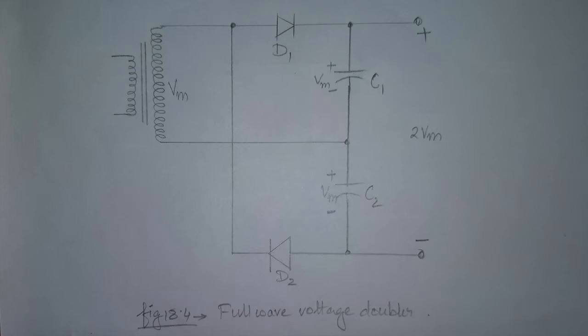Since the capacitors C1 and C2 are in series, so the effective capacitance is less than either C1 and C2 alone. The peak inverse voltage across each diode is twice Vm.